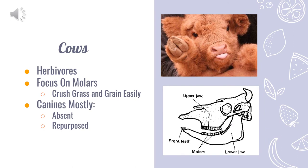If you take a look at the diagram of a cow's mouth, you'll notice that only their incisors and molars are labeled. This is because cows only have incisors and molars — their canines are absent — because they only eat grains and grass, making them herbivores. Since a cow's diet only consists of plants, which can contain hard stems, they chew with a side-to-side motion instead of an up-and-down motion like humans do, so their molars can shred the food into tiny pieces.